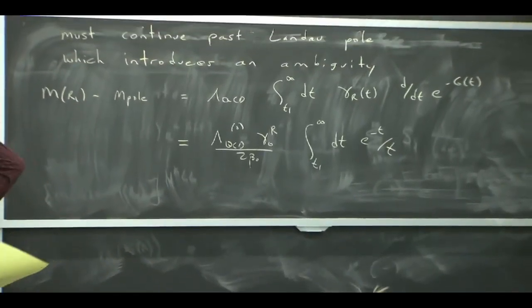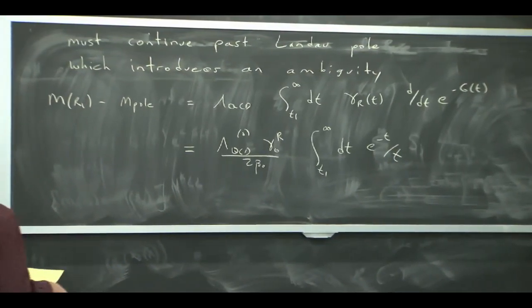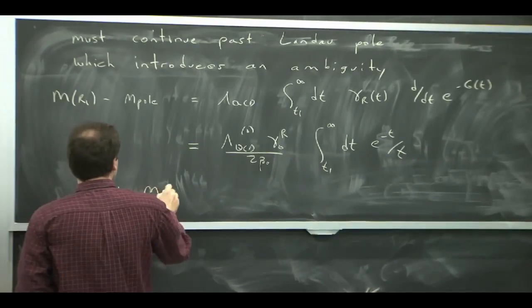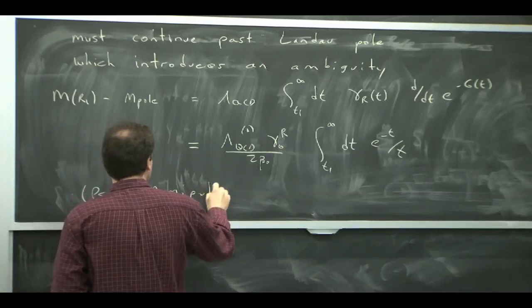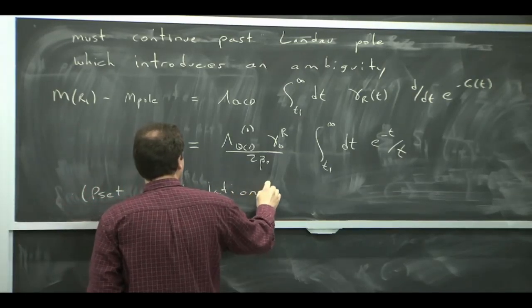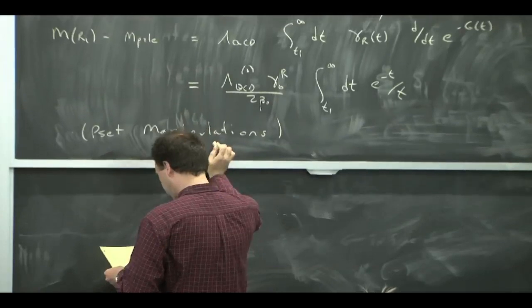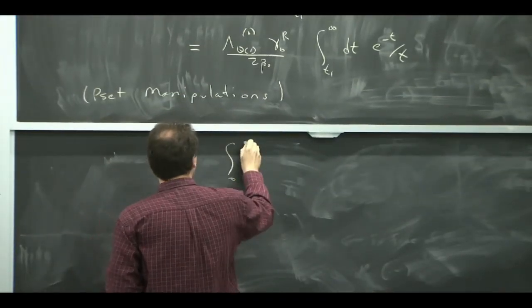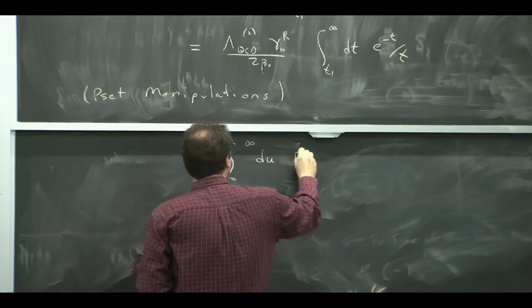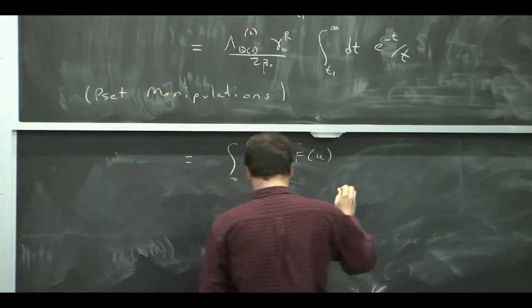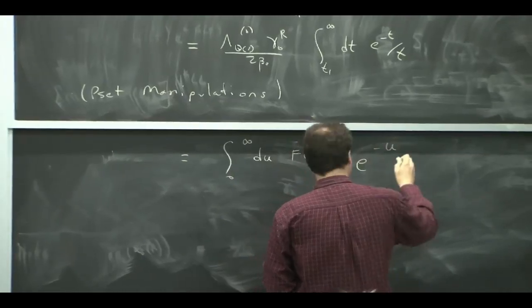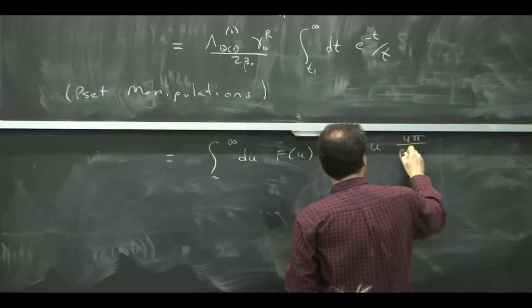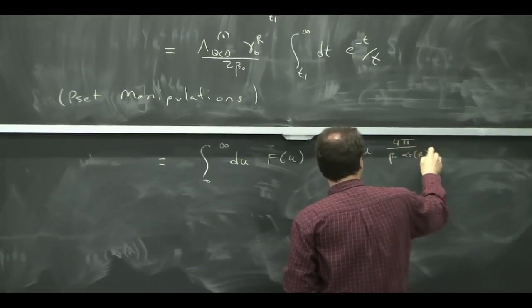So it turns out that you can actually take this integral, and I'm going to leave this for your problem set, and write it in the form of a Borel integral, with an exponential that's exactly the Borel transform variable, so I just change a variable from t to u.